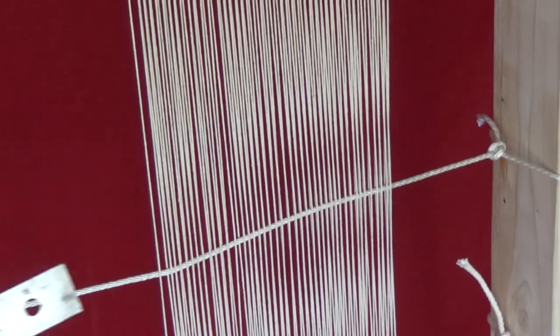For example, if your first warp string starts on top of this string, then the last warp should be under this string, as you can see. Once you're sure everything looks good, you can use a ruler to replace the top string.